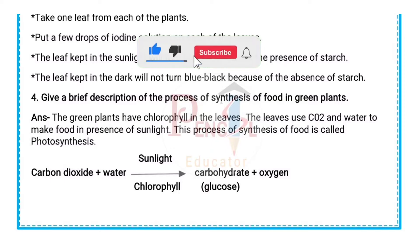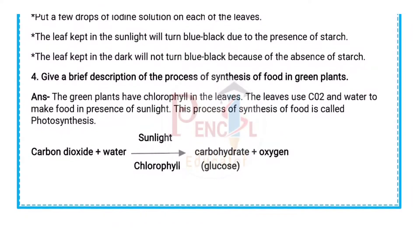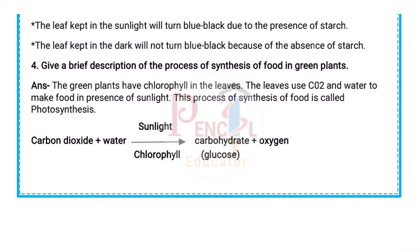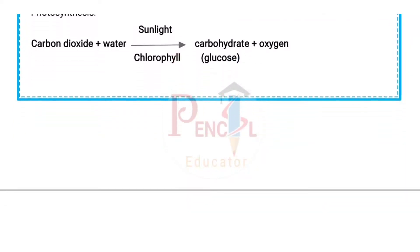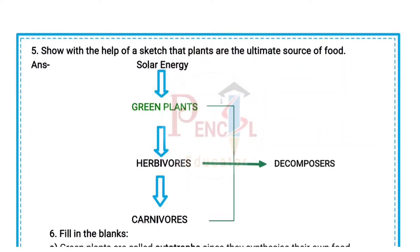Fourth question: Give a brief description of the process of synthesis of food in green plants. Answer: Green plants have chlorophyll in the leaves. The leaves use carbon dioxide and water to make food in the presence of sunlight. This process of synthesis of food is called photosynthesis. The equation of photosynthesis has been given.